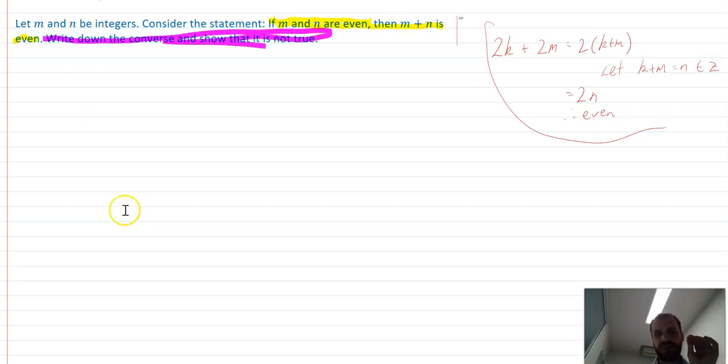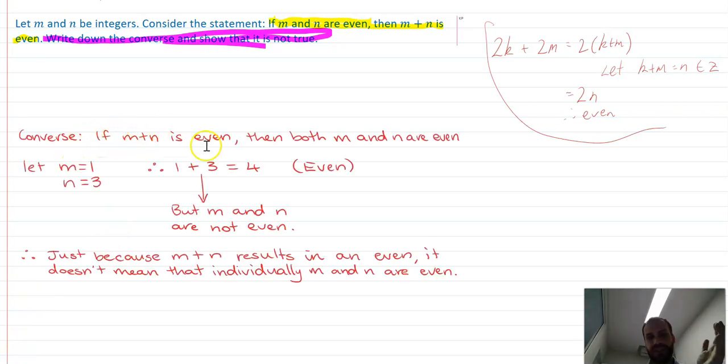And now we just need to prove that that's not true. It's really easy to prove something's not true, because you've only got to show me one example where it's not true. So there's our converse statement. If M plus N is even, then both M and N are even. Then we just do a counter example. M equals 1, N equals 3, add them together, and you get 4, which is an even number. But M and N are not even.